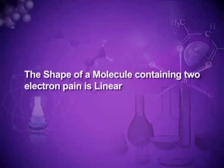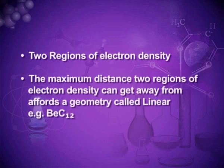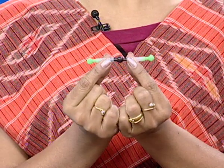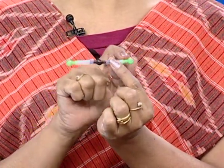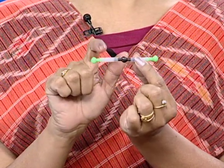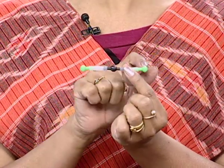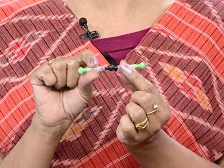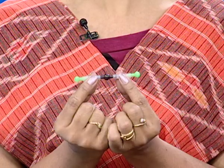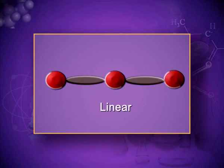The simplest example: a molecule containing two electron pairs takes a linear shape. There will be two regions of electron density, and the maximum distance the two regions can get away from each other affords a geometry called linear. This is the beryllium chloride molecule — the black ball is beryllium and the green balls are the two chlorine atoms. The angle between the two chlorine atoms is 180 degrees.